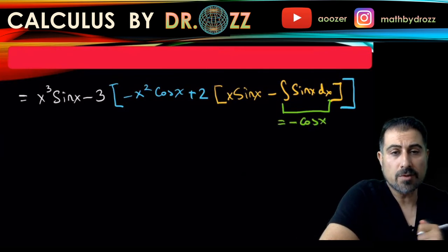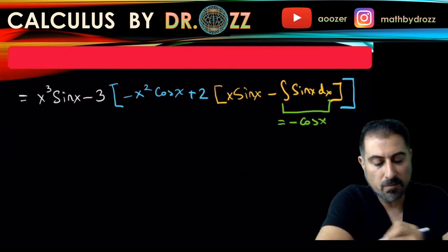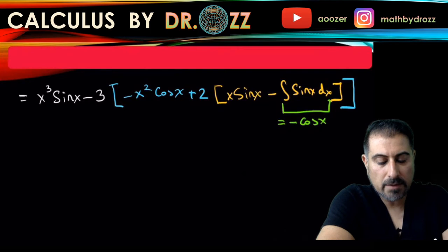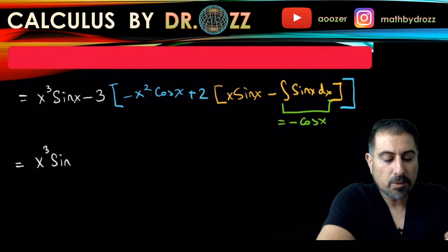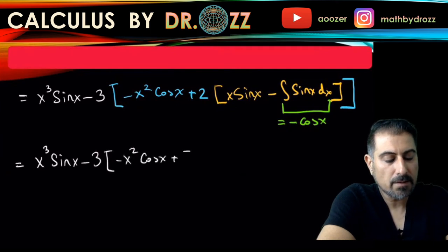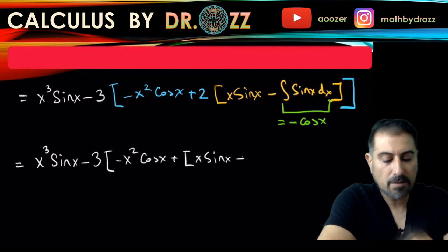So let's bring everything together with one final white color. x cubed sine x minus three minus x squared cosine x, another bracket x sine x plus cosine x. Alright.